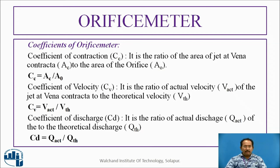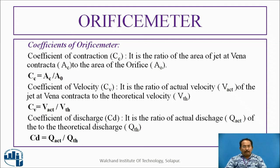Some coefficients related to the orifice meter are: Coefficient of contraction — the ratio of area of jet at vena contracta to the area of the orifice. Coefficient of velocity — the ratio of actual velocity of the jet at vena contracta to the theoretical velocity. Coefficient of discharge — the ratio of actual discharge to the theoretical discharge.